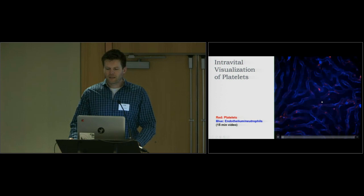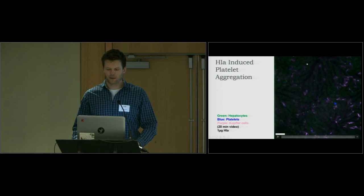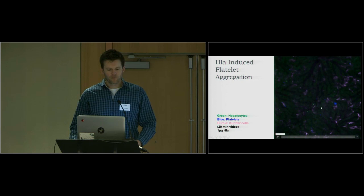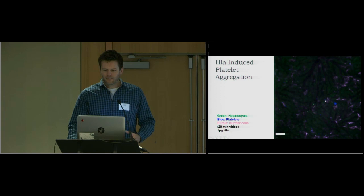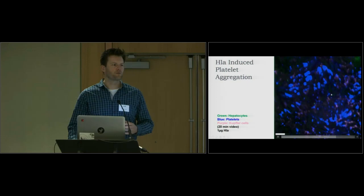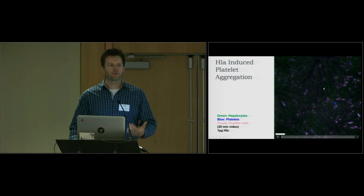At slightly higher magnification of the liver, you again see hepatocytes in green, Kupffer cells in purple, and sinusoids in between. After one minute, I started infusing one microgram of alpha toxin — and this is what happens: you get massive aggregation of platelets in the circulation, and all these platelets get deposited in the liver. Later on, these mice start to shake, indicating profusion difficulties and breathing problems. So this toxin is really potent at aggregating platelets in vivo.